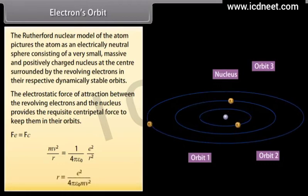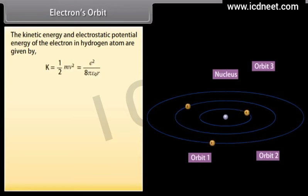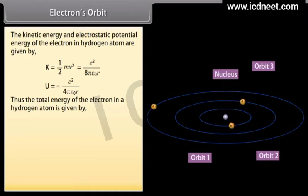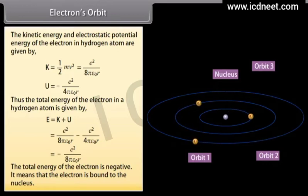This gives r = e²/(4πε₀mv²). The kinetic energy and electrostatic potential energy of the electron in a hydrogen atom are: K = ½mv² = e²/(8πε₀r), and U = −e²/(4πε₀r). Thus the total energy of the electron is E = K + U = −e²/(8πε₀r). The total energy is negative, meaning the electron is bound to the nucleus.